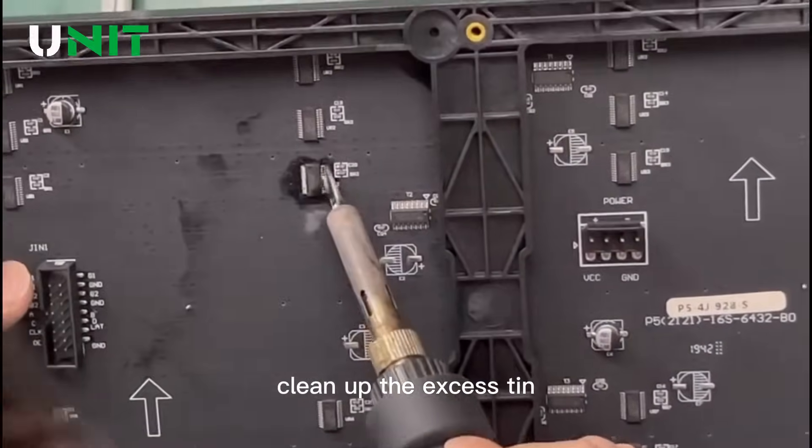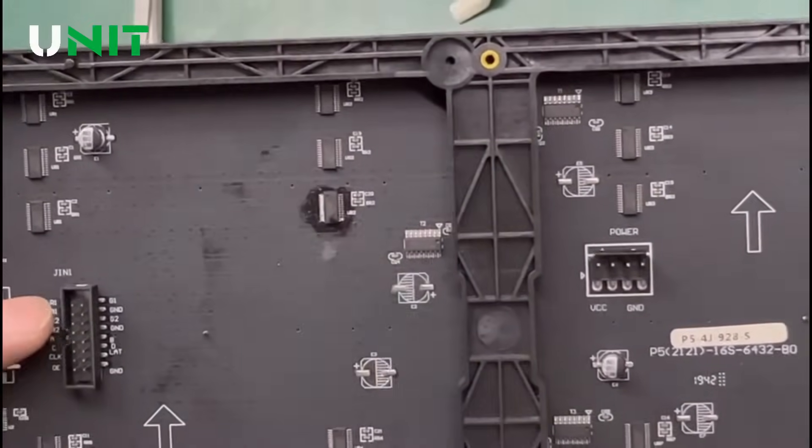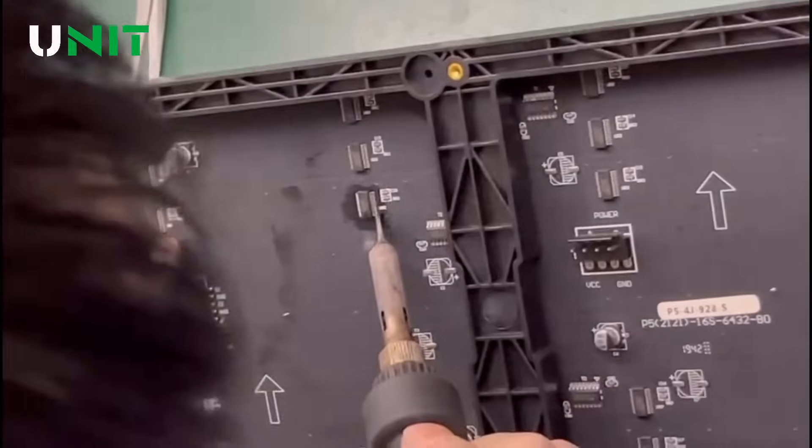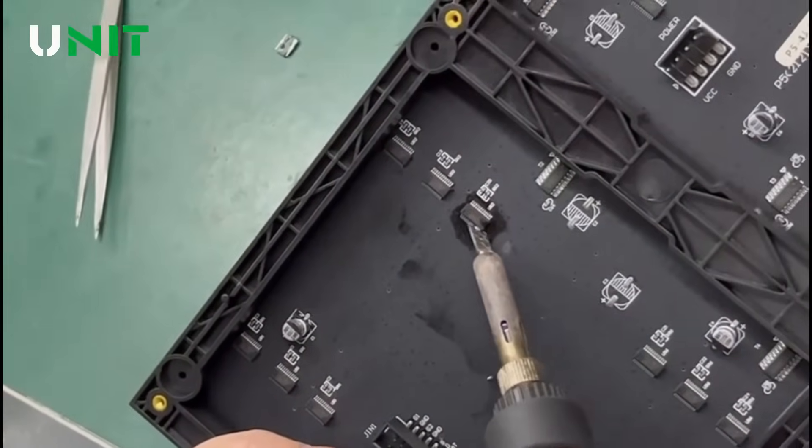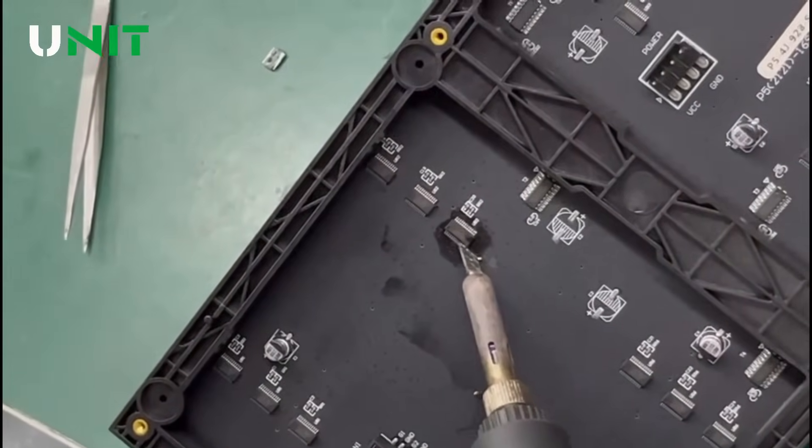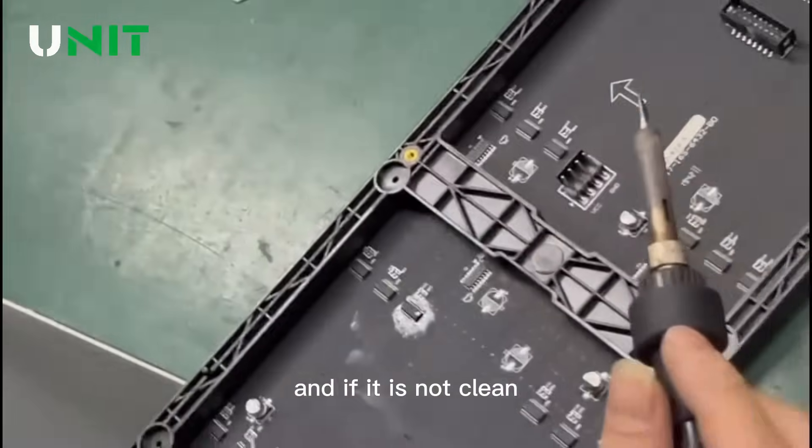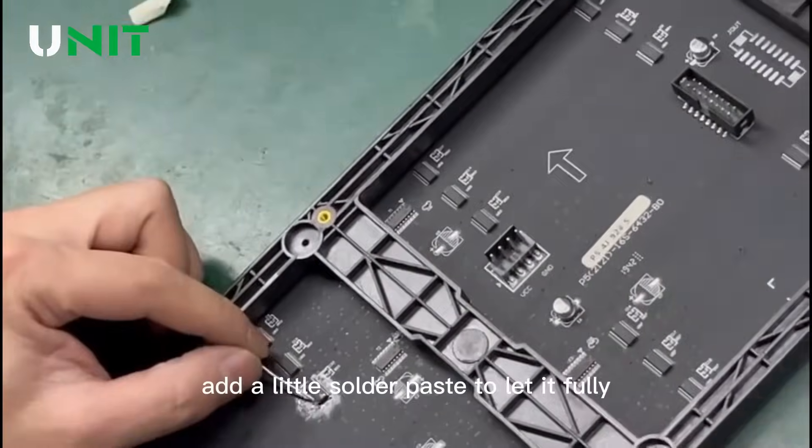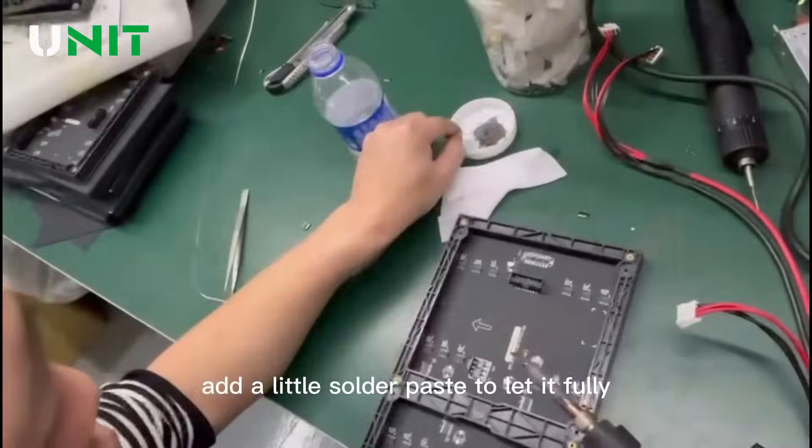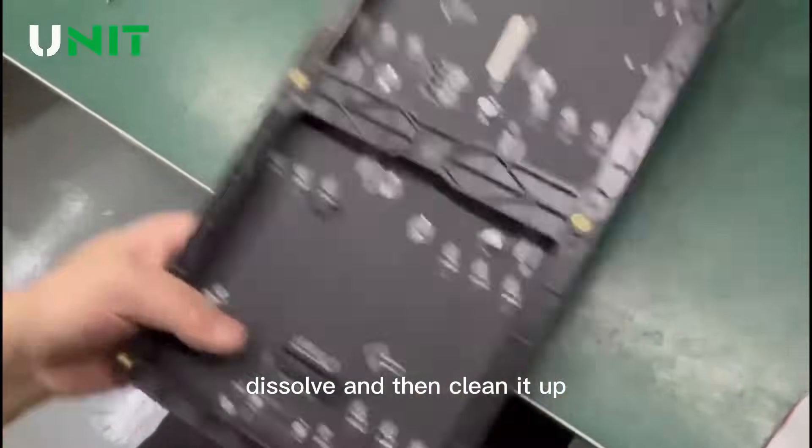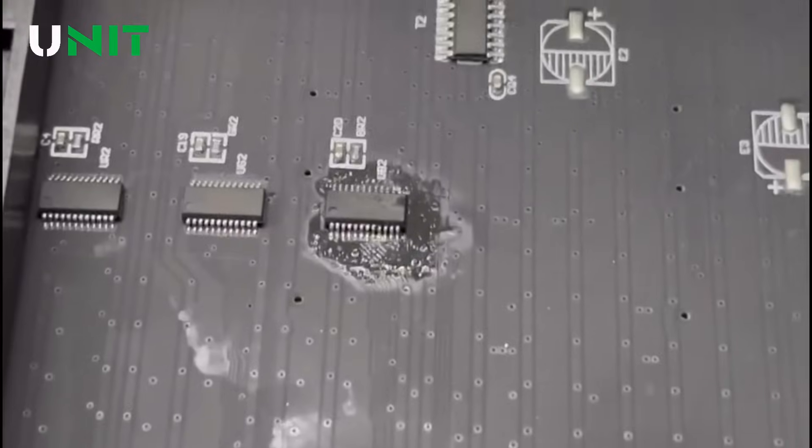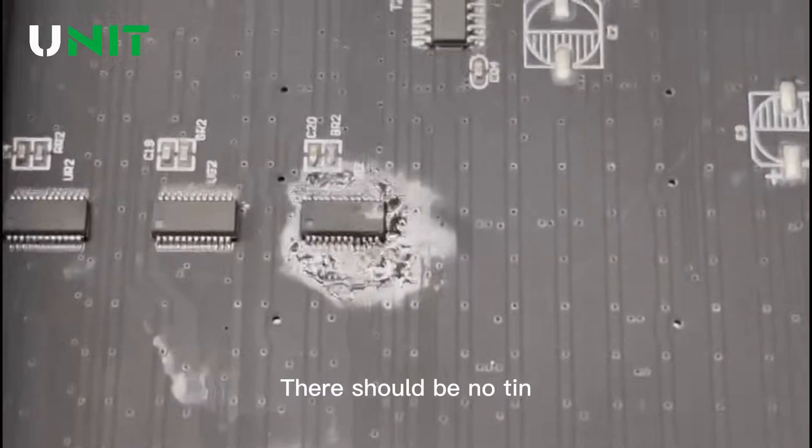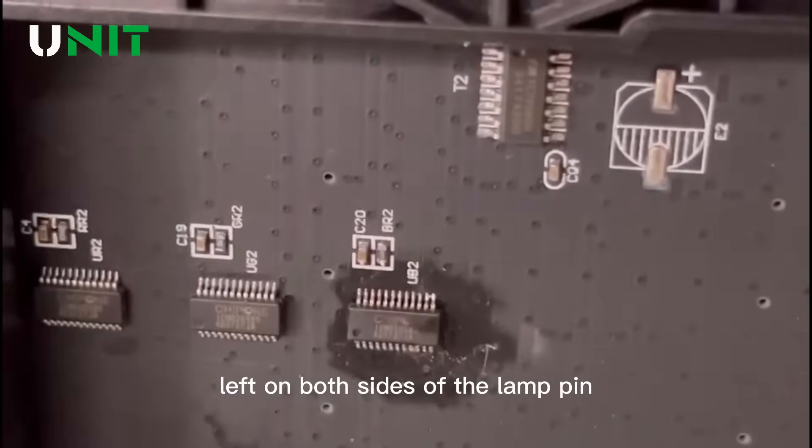Clean up the excess tin. If it is not clean, add a little solder paste to let it fully dissolve and then clean it up. There should be no tin left on both sides of the lamp pin.